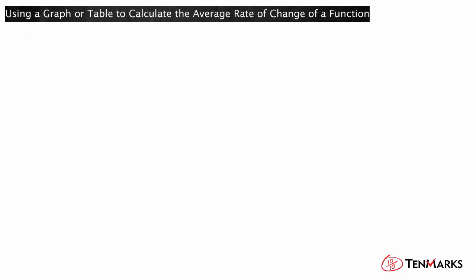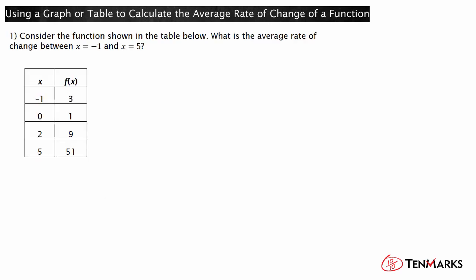Let's start by looking at a function shown in a table. Consider the function shown in the table below. What is the average rate of change between x equals negative 1 and x equals 5? You want to find the average rate of change between x equals negative 1 and x equals 5 for the function. First, record the corresponding ordered pairs: negative 1, 3, and 5, 51.